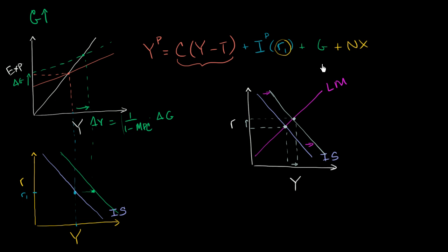So in this model, when government spending goes up, when G goes up, it shifts the IS curve to the right, causing an increase in real interest rates and an increase in real GDP, according to this model.